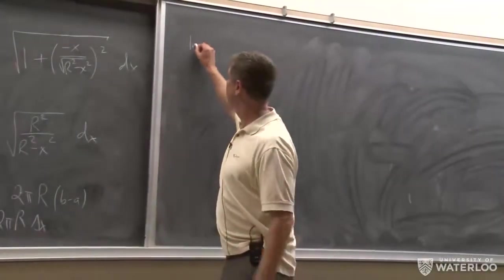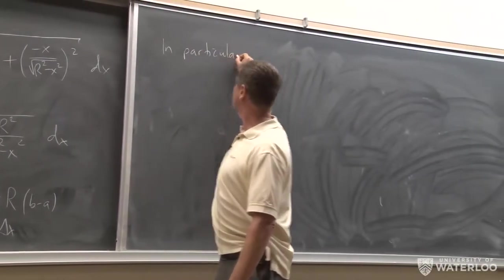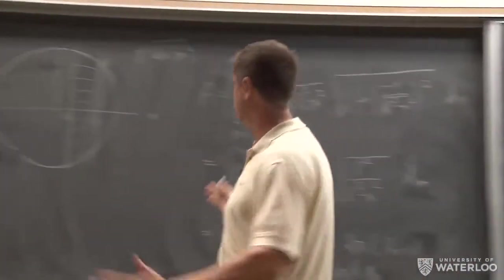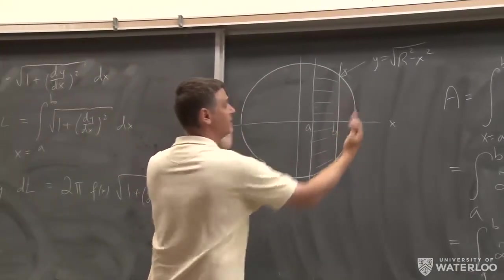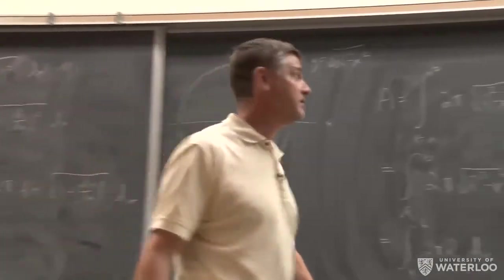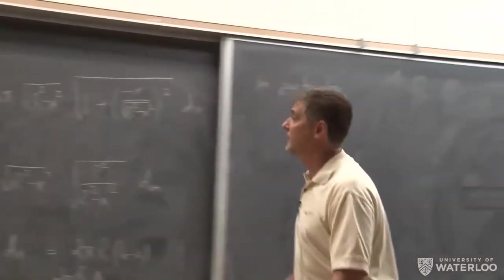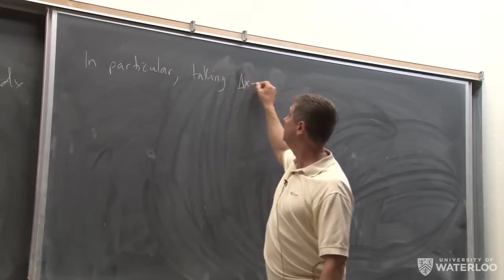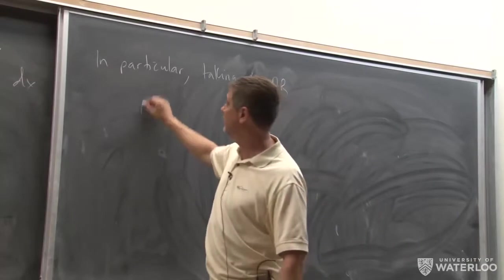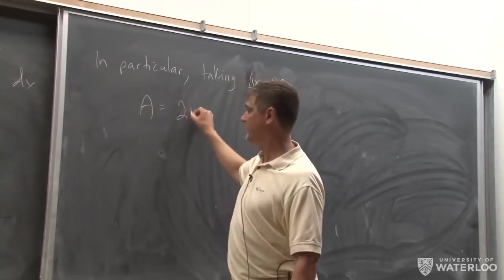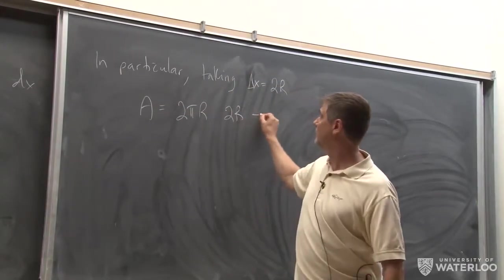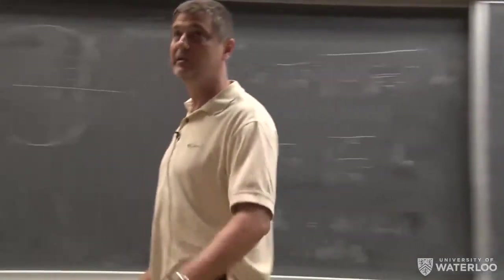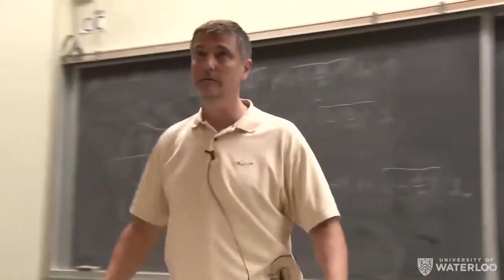In particular, if you consider a slice of thickness 2R — slicing with two planes at the two poles — then you get the entire surface area of the sphere. That's a well-known formula students usually know from high school. Taking Δx to be twice the radius, you get the entire area of the sphere as 2πR × 2R = 4πR². A lot of students know that from high school and can then see it again using calculus.